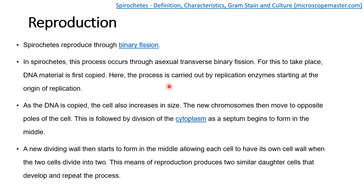About reproduction: Spirochetes reproduce through binary fission, specifically an asexual transverse binary fission process. The DNA material is first copied, and the process is carried out by replication enzymes starting at the origin of replication. As the DNA is copied, the cell also increases in size. New chromosomes move to opposite poles of the cell, followed by division of the cytoplasm. A septum begins to form in the middle, and a new dividing wall starts to form, allowing each cell to have its own cell wall separately. Eventually, the two cells divide.